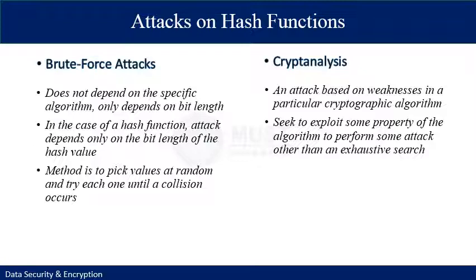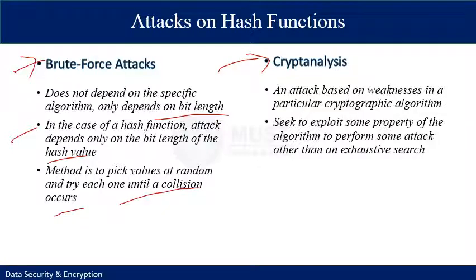All encryption algorithms face some kinds of attacks. There are two categories of attacks on hash functions: the most common is brute force attack, and the second is cryptanalysis. A brute force attack does not depend on any specific algorithm — it can be used against all algorithms and only depends on the bit length of the input. For hash functions, the attack depends only on the bit length of the hash value; the method is to pick values at random and try each one until a collision occurs. Cryptanalysis is an attack based on weaknesses in a particular cryptographic algorithm, seeking to exploit some property of the algorithm rather than performing an exhaustive search.